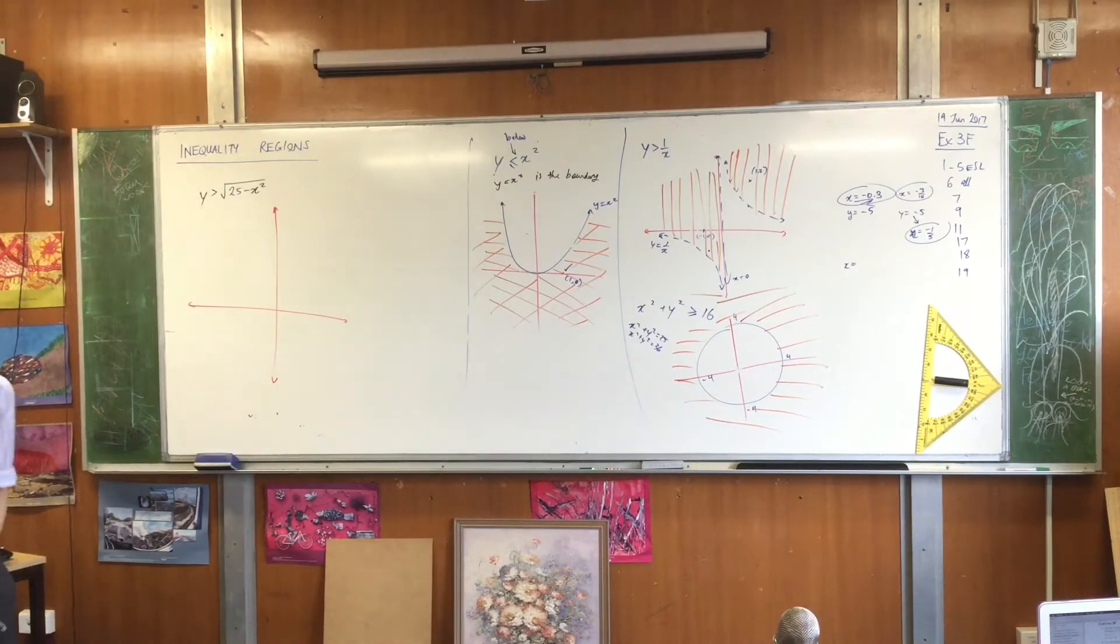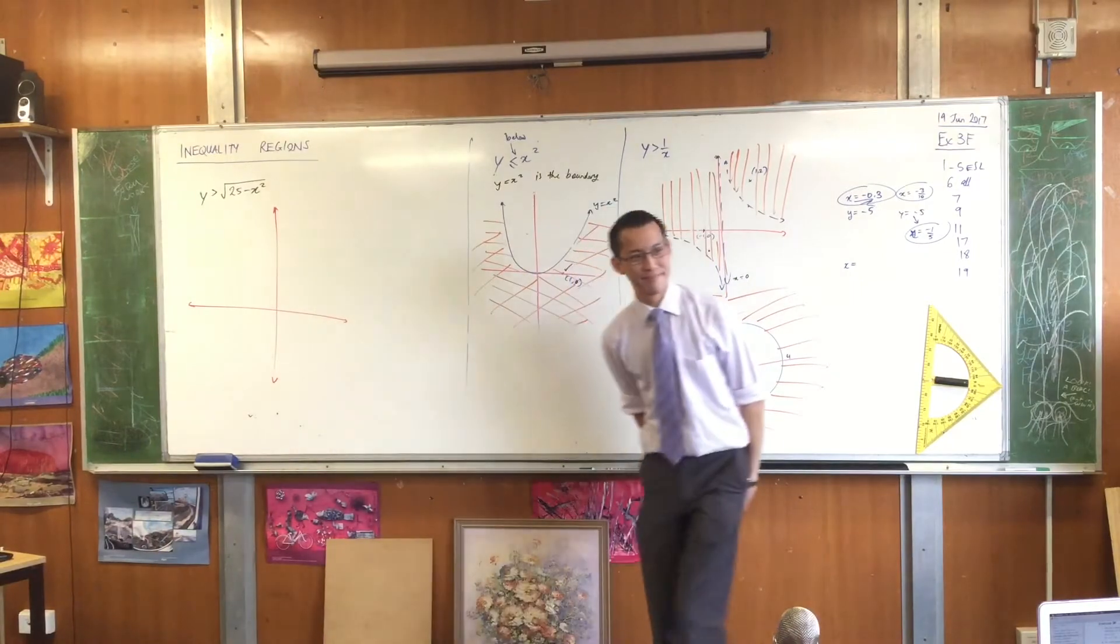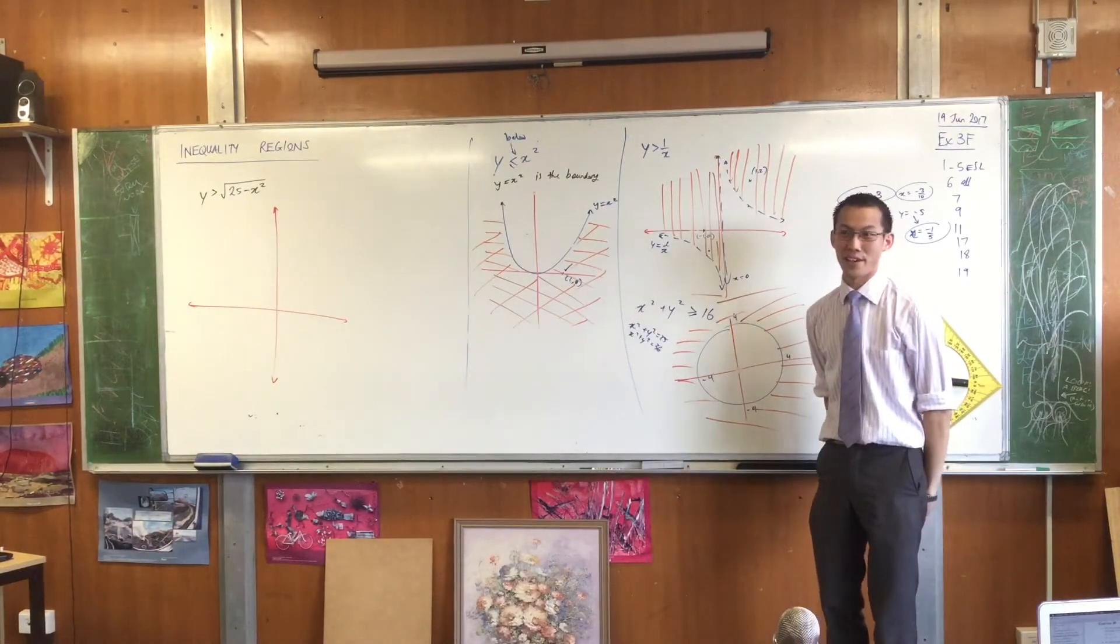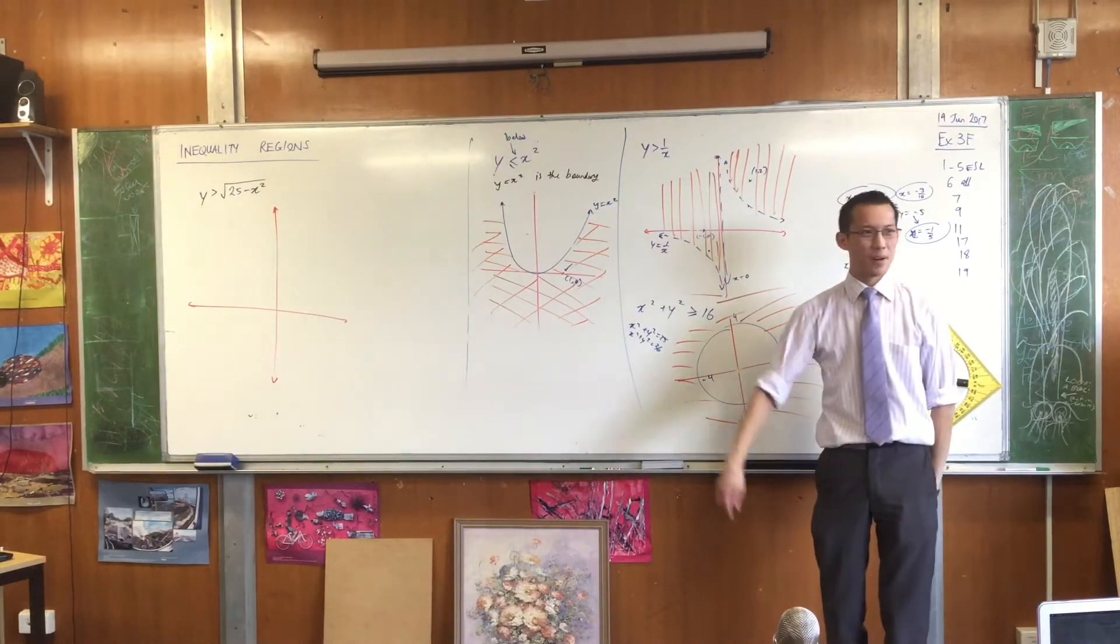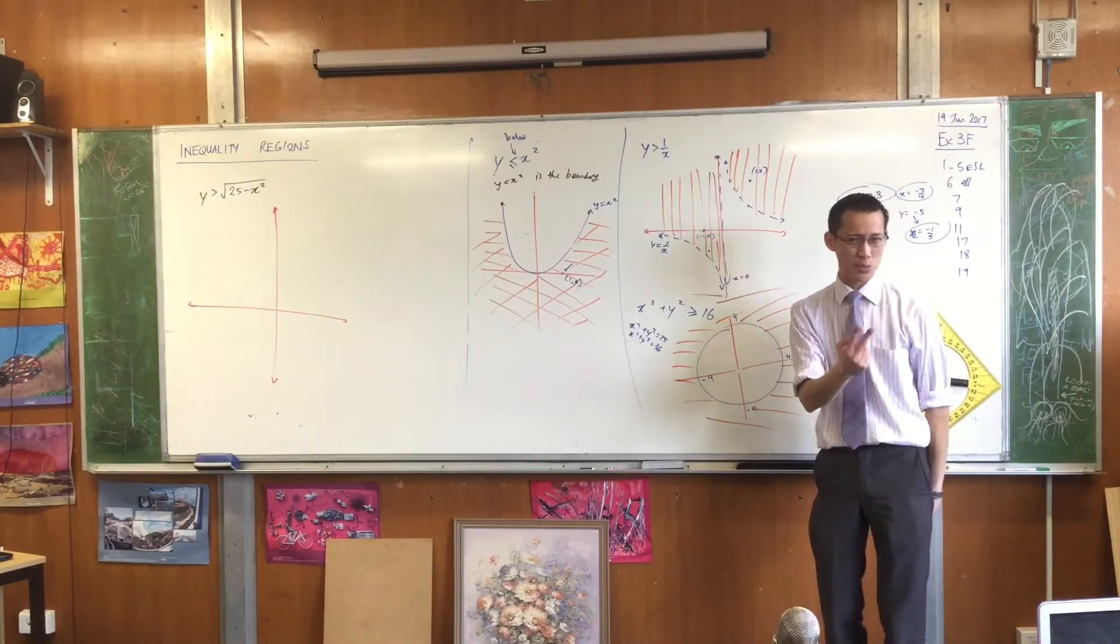Have a look at it with me. Y is greater than the square root of 25 minus x square. Now, what's our normal approach for doing this? There are really two steps we've been using so far.